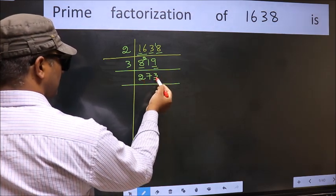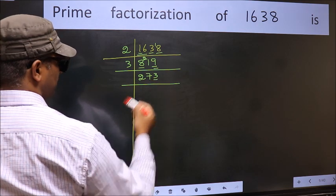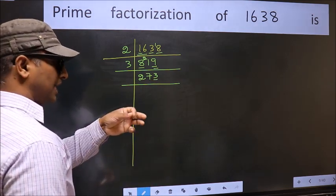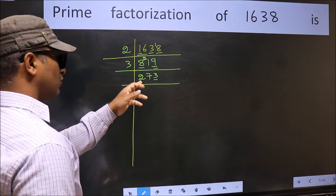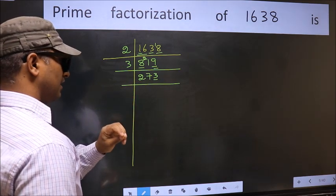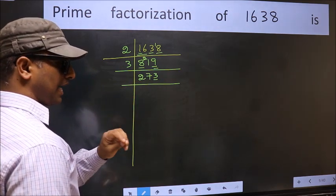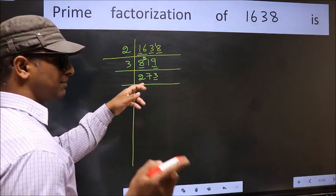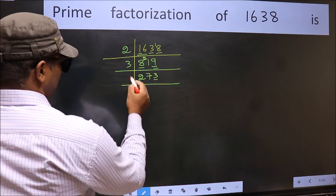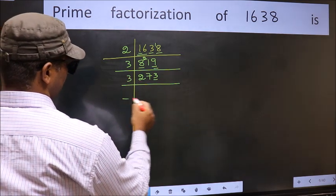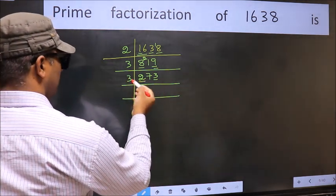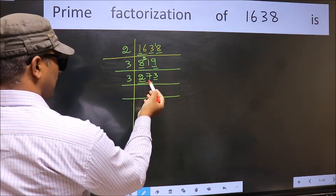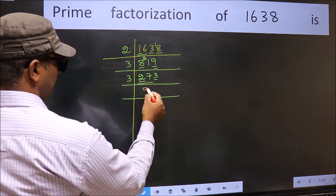Now the last digit 3 is not even, so not divisible by 2. To check divisibility by 3, add the digits: 2 plus 7 plus 3 equals 12, and 12 is divisible by 3. So this number is also divisible by 3. So take 3 here. First number 2 is smaller than 3, so take 2 numbers: 27. When do we get 27 in the 3 table? 3 nines are 27. The other number is 3.